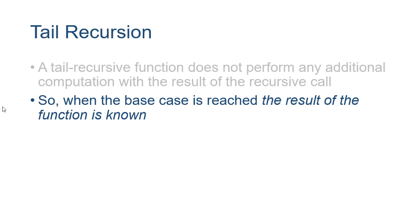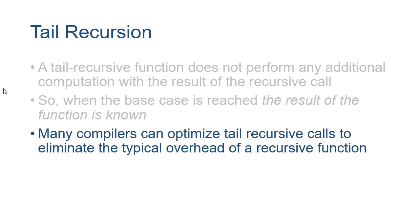Now with tail recursion, since we're not doing that additional work, when we reach the base case the result of our function is known. The real advantage is that many compilers can optimize tail recursive calls to eliminate a lot of the overhead that occurs with a typical recursive function.